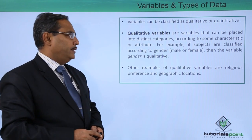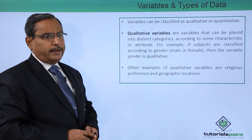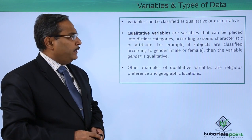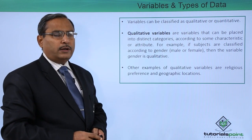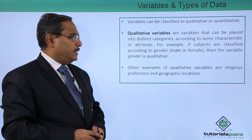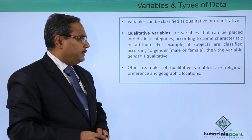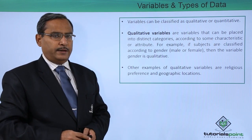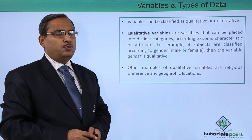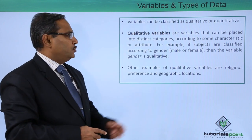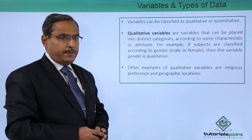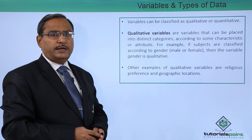Starting with qualitative variables: qualitative variables are variables that can be placed into distinct categories according to some characteristics or attribute. For example, if subjects are classified according to gender — that is male or female — then the variable gender is a qualitative variable.